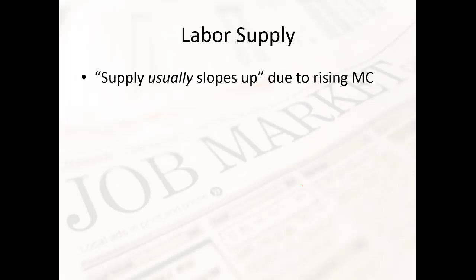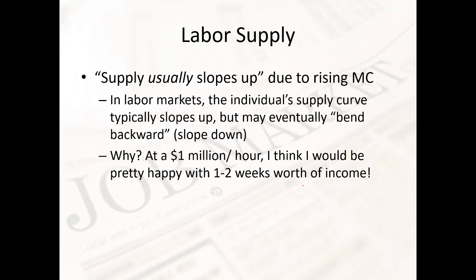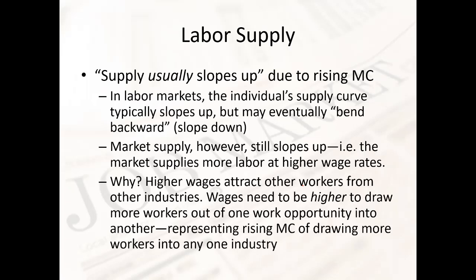Now let's talk about the supply curve for labor. Supply usually slopes up in a labor market due to rising marginal costs. The individual supply curve usually slopes up, but it may eventually bend backward and have a portion that slopes down. Why? Think about a ridiculously high wage, like a million dollars an hour — at that rate, I'd be happy to work maybe one or two weeks a year and spend the rest on vacation. The overall market for labor, though, will still slope up, meaning the market as a whole will supply more labor at a higher wage rate.